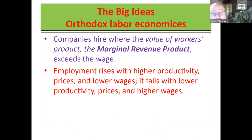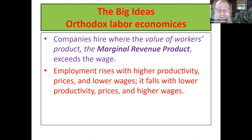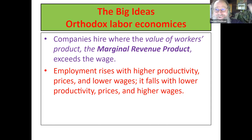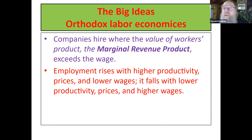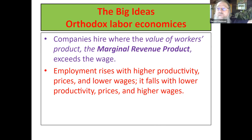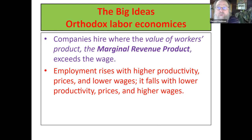So employment will rise with higher productivity and with lower wages, and it will fall with lower productivity and higher wages. Wages go up — you have to find the point where the marginal revenue product is higher, which means fewer workers. Productivity goes up — your marginal revenue product curve shifts up, and the point where it equals the wage is further out.